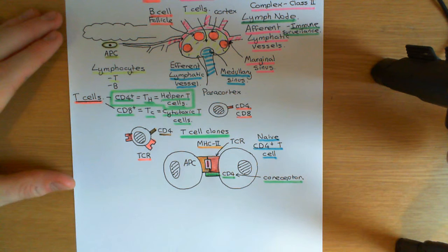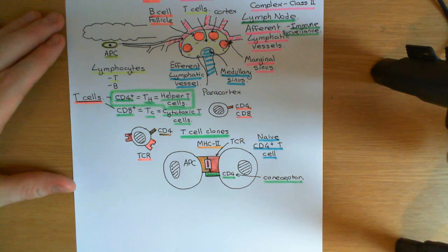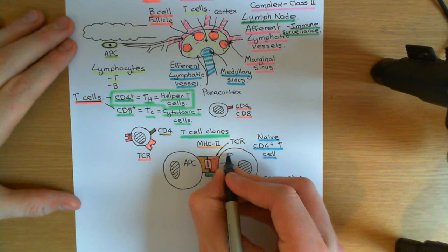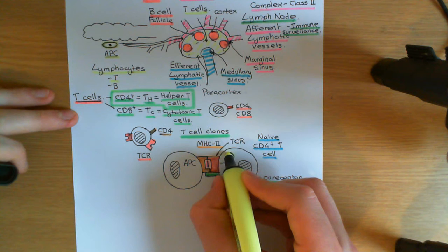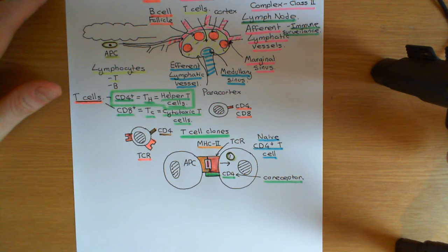This interaction delivers signal 1 of activation to the T cell — a pro-activation signal that starts the activation process. However, if you just receive signal 1, that's not going to result in activation of the naive CD4 positive T cell. You must receive not only signal 1 but also signal 2 to actually activate the naive CD4 positive T cell.